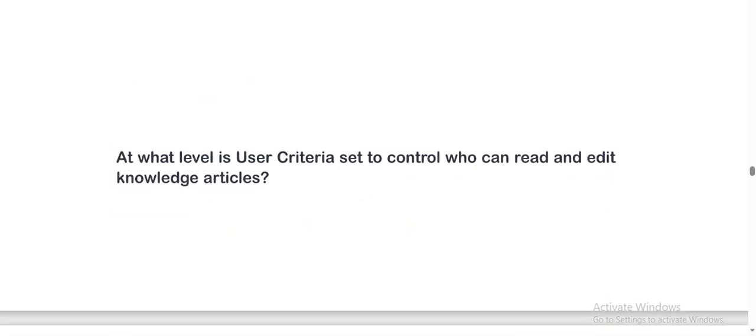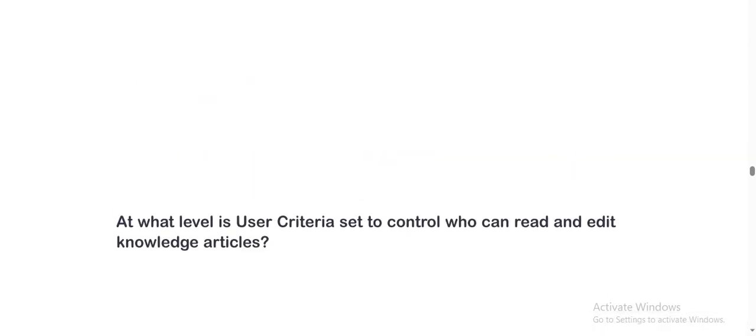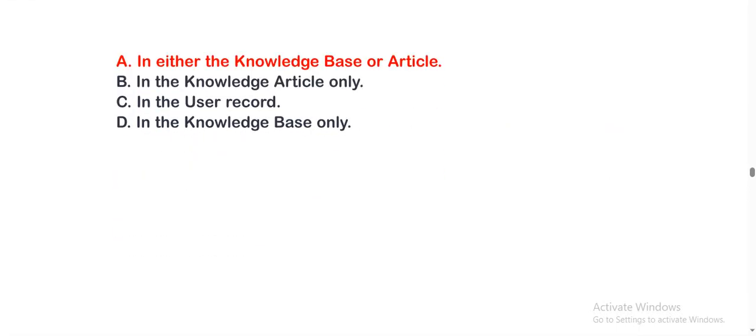At what level is user criteria set to control who can read and edit knowledge articles? Option A: in either the knowledge base or article. Option B: in the knowledge articles only. Option C: in the user record. Option D: in the knowledge base only. The correct option is A.